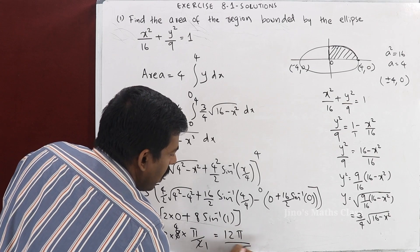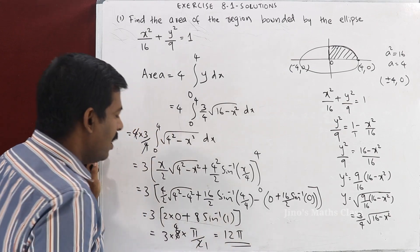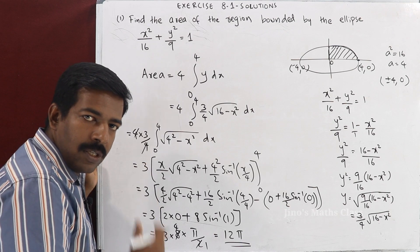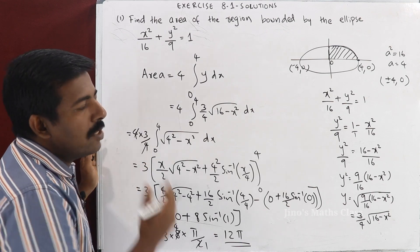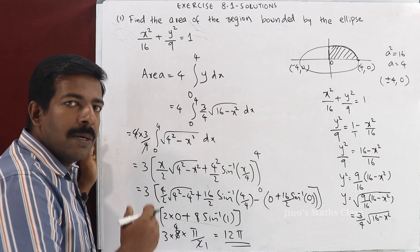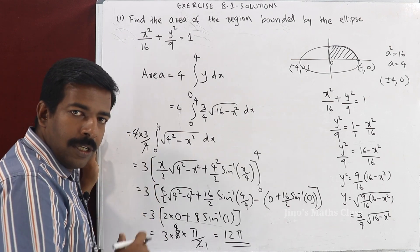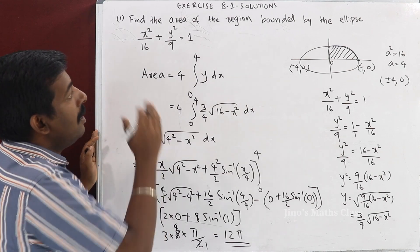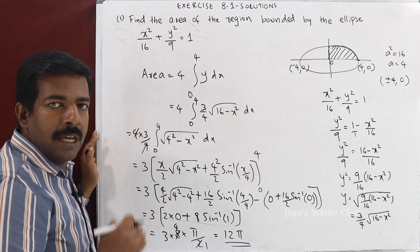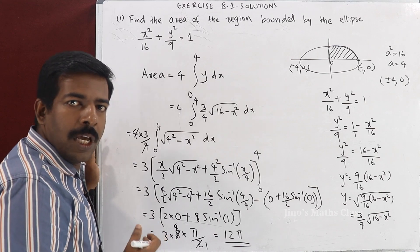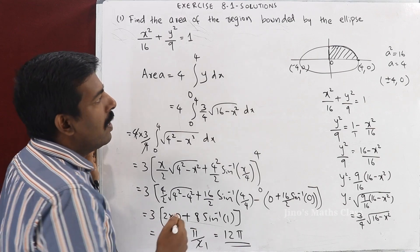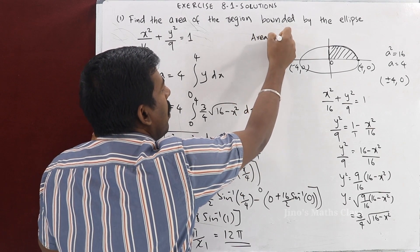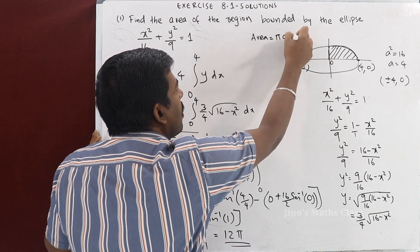So the area of the ellipse is 12π square units. We can verify: the formula for the area of an ellipse is π·a·b, which gives π × 4 × 3 = 12π. The answer is correct.